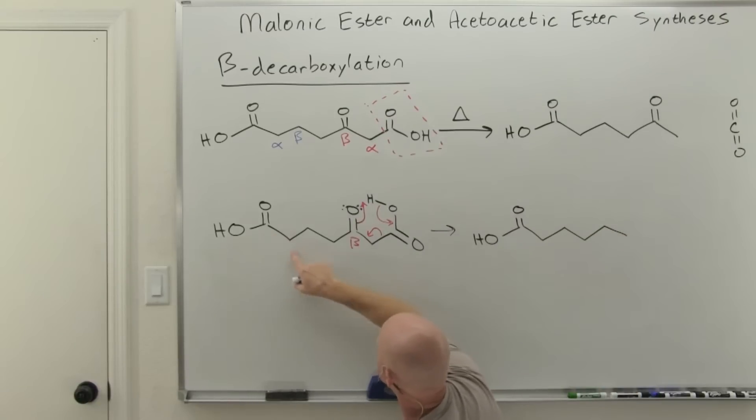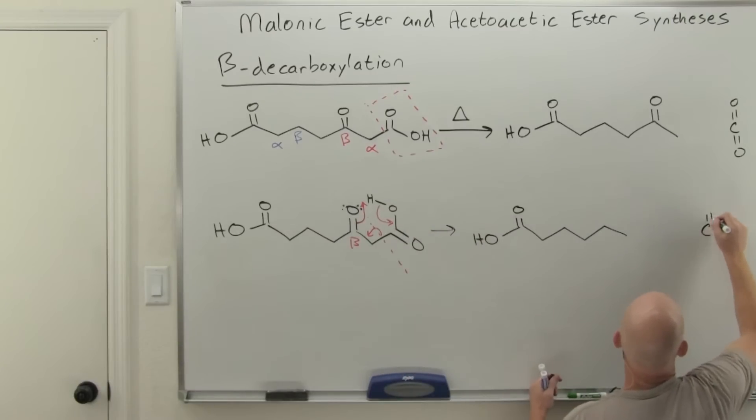We've still got six carbons, one, two, three, four, five, six. But we have broken this bond entirely so that we can lose the CO2 over here. And so that's where our CO2 comes from.